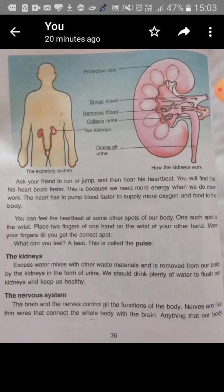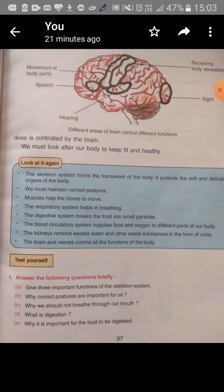We must take care of our body, eat a healthy diet, and do exercises. Similarly, in the nervous system, information goes from our brain to various parts of the body so that we are able to do any activity, movement, and thinking. These are all controlled by the nervous system, where the brain is a very important part, and the brain is well protected inside the skull.